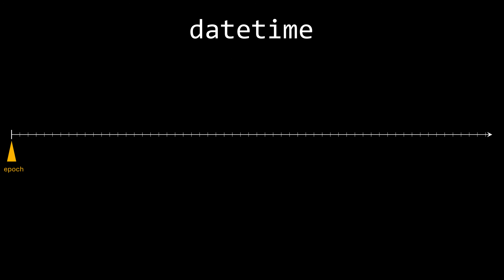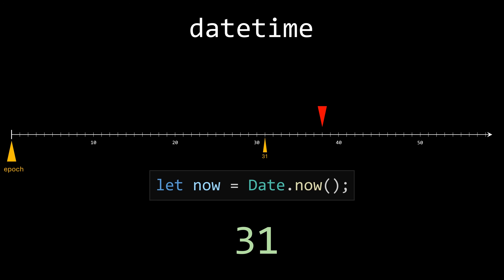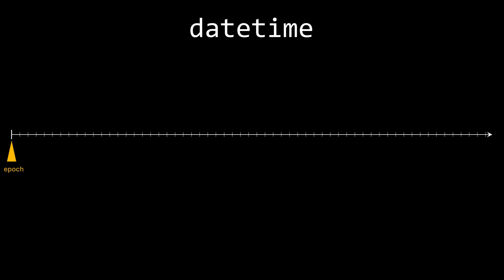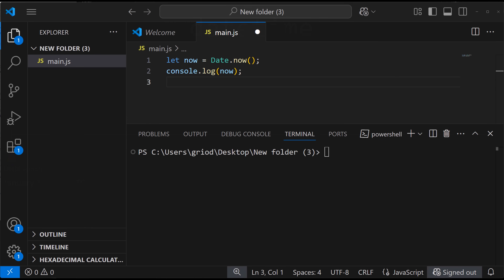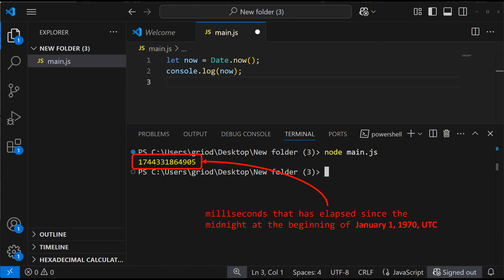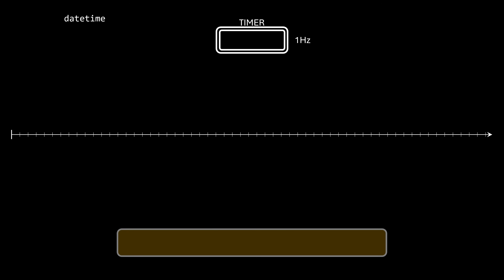Just like CPU scheduling lets multiple processes share a single processor, we can use software to let multiple processes share one timer. We need a way to track time. We define a starting point called the epoch and count time units from there. One of the most widely used epochs is the Unix epoch, which starts at midnight January 1, 1970. In JavaScript, date.now returns the number of milliseconds since the Unix epoch. For simplicity, I'll assume our example begins at time zero and the timer runs at one hertz. Any process that calls sleep gets added to a special list called the sleeping queue.